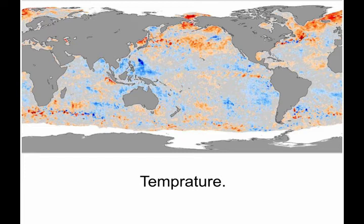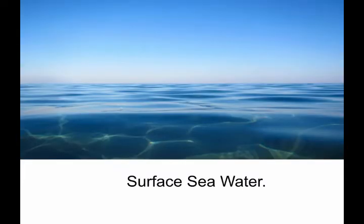Now let us look at the geographical explanation. Temperature is a major property of seawater. The surface temperature of seawater is not uniform everywhere — it is not the same everywhere. It depends on different factors like latitude and altitude, which means height or depth. Up to 500 meters depth, seawater is called surface seawater. Its temperature is not the same everywhere.